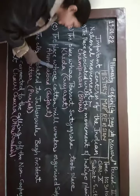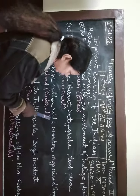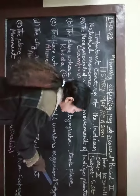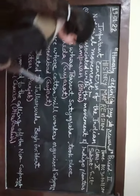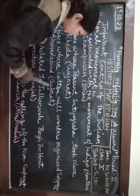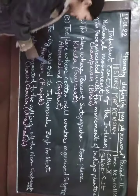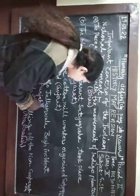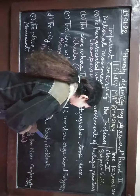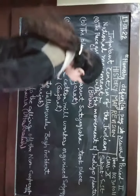The place where cotton mill workers organized Satyagraha - that place was Ahmedabad, again in Gujarat.